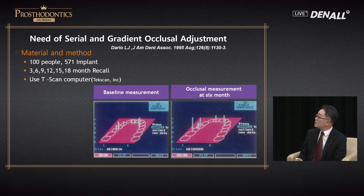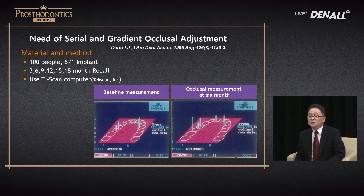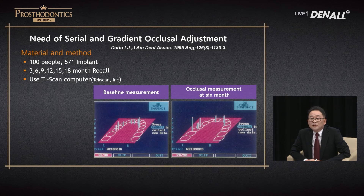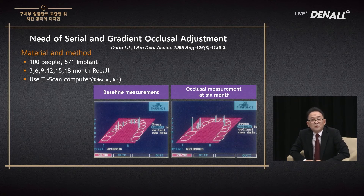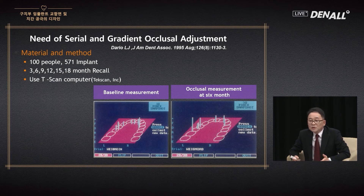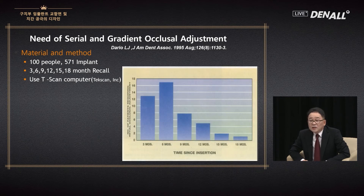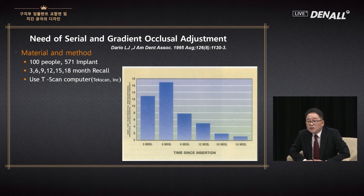This is the last part — my favorite paper. One hundred people. Occlusal adjustment is required or necessary — that is the point. At one, three, and six months follow-up, what do you check? You ask the patient if they are okay, and if there is no problem, you send the patient home after some cleaning. This is a study using T-scan at 3, 6, 9, 12, 15, and 18 months.